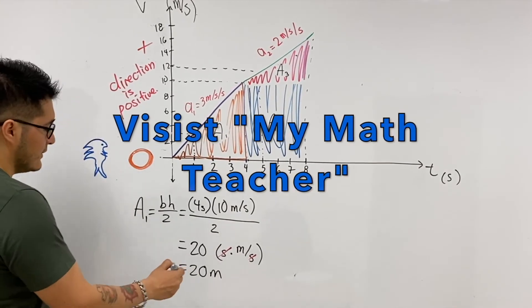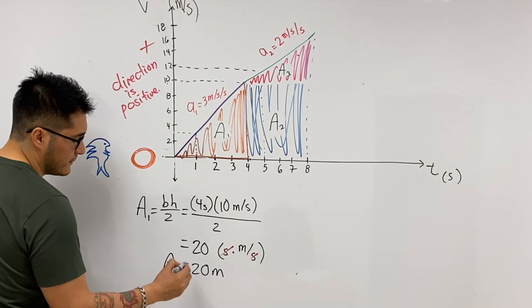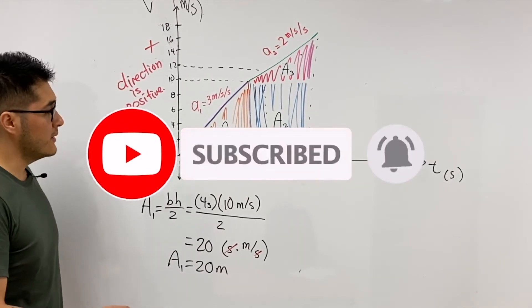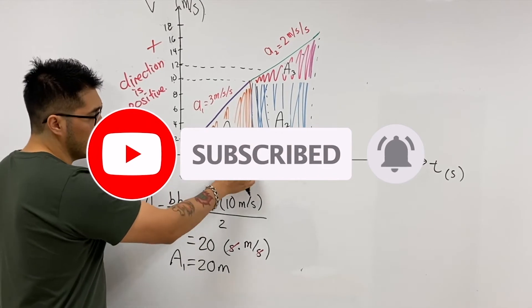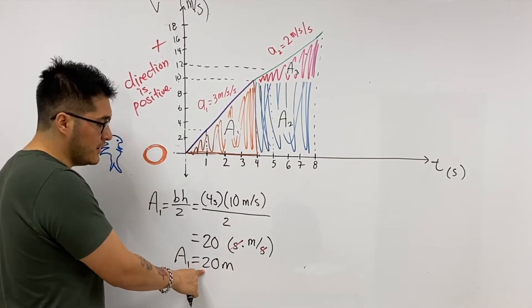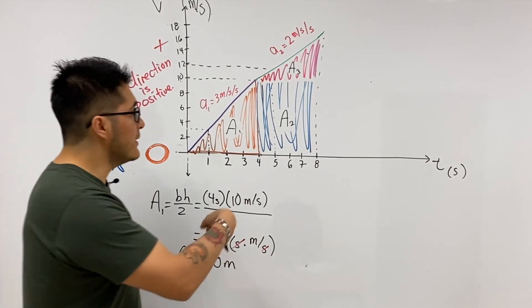Again, I am using a lot of approximations here and I'm skipping steps. But if you're more interested in how to calculate areas, you have to click on math videos to learn about that. So in the first four seconds, there's a displacement of 20 meters. Then let's calculate the other areas.